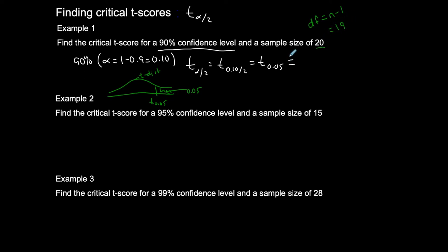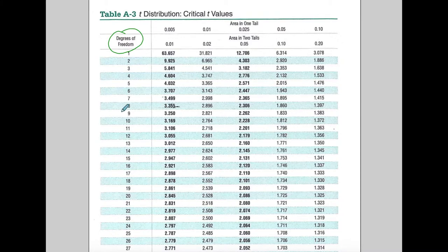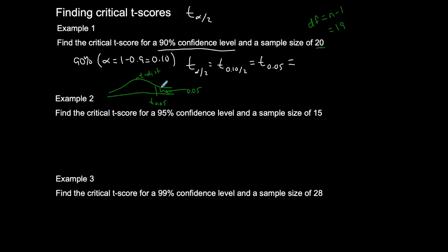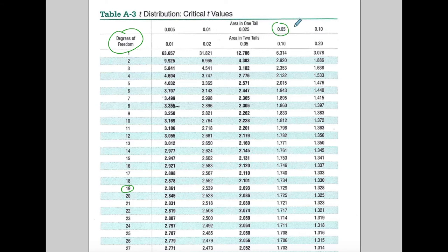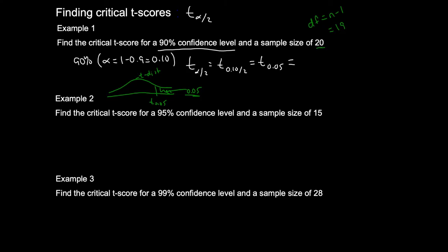We have everything we need: degrees of freedom = 19 and area in one tail = 0.05. Going to the table, degrees of freedom of 19 is here, and the area in one tail is 0.05. Lining those up, I get 1.729. That is my critical t-score for this case: 1.729.